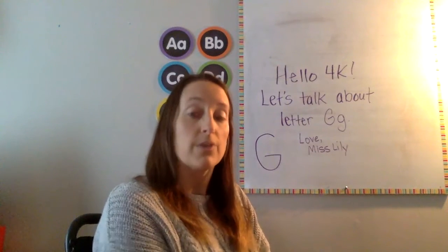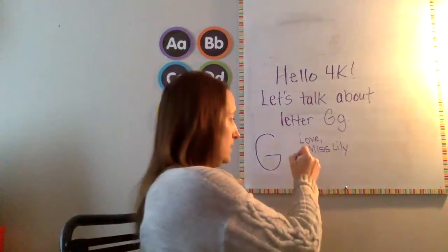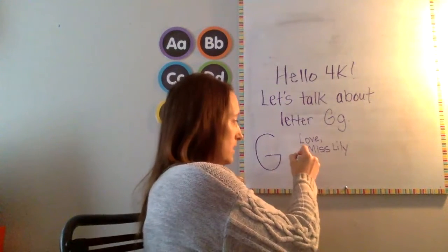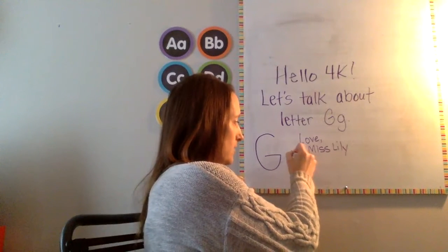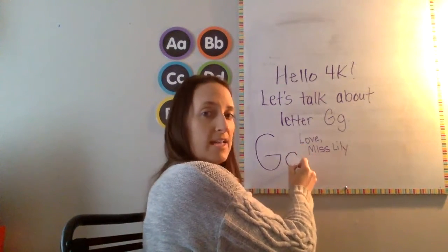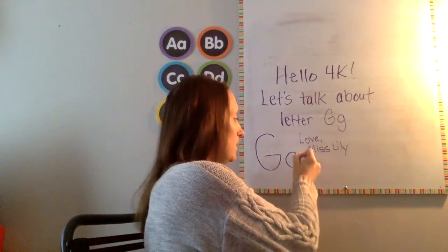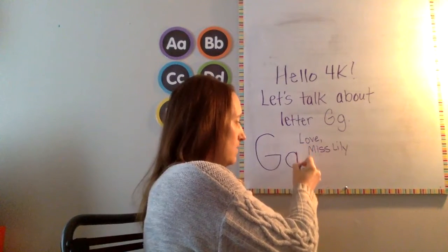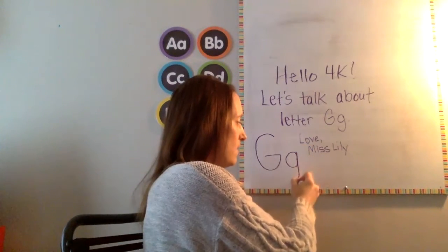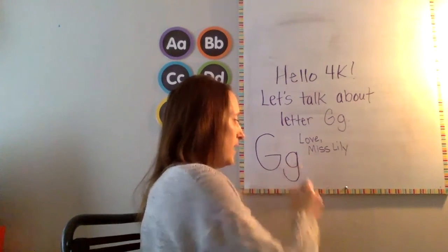Our lowercase G, it's a little bit tricky. We start with our magic C curve again, a smaller one — a smaller magic C curve. And then we go up and we go down. We go down really far and then we curve at the bottom. And there's our lowercase G.